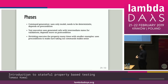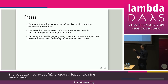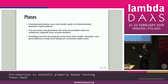To sum up, there are three phases of stateful property-based testing. First, command generation — this uses only the model, doesn't touch the database, uses your preconditions, and creates a set of commands to run on your system. The next phase is test execution, which uses generated calls with intermediate states for validations and relies more on the postcondition. The last phase is when execution fails: the shrinking phase, which does test execution over and over with smaller and smaller counter-examples.